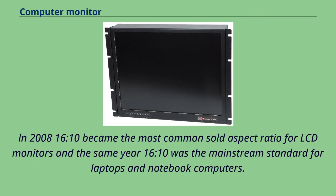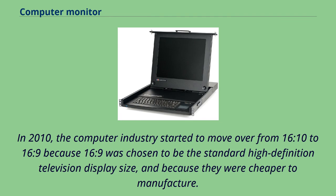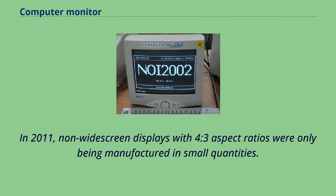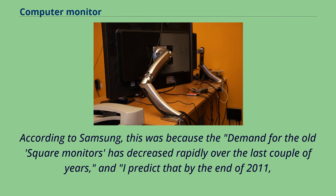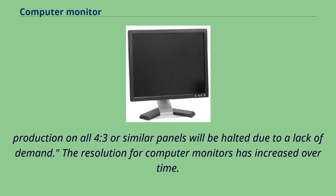In 2008, 16:10 became the most common sold aspect ratio for LCD monitors, and the same year 16:10 was the mainstream standard for laptops and notebook computers. In 2010, the computer industry started to move from 16:10 to 16:9 because 16:9 was chosen to be the standard high-definition television display size and because they were cheaper to manufacture. In 2011, non-widescreen displays with 4:3 aspect ratios were only being manufactured in small quantities. According to Samsung, the demand for the old square monitors had decreased rapidly, predicting that by the end of 2011, production on all 4:3 or similar panels would be halted due to a lack of demand.